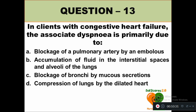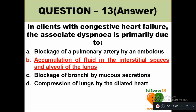Question 13: In clients with congestive heart failure, the associated dyspnea is primarily due to: option A blockage of pulmonary artery by an embolus, option B accumulation of fluid in the interstitial spaces and alveoli of the lungs, option C blockage of bronchi by mucus secretions, option D compression of lungs by the dilated heart. The correct answer is option B — accumulation of fluid in the interstitial spaces and alveoli of the lungs.